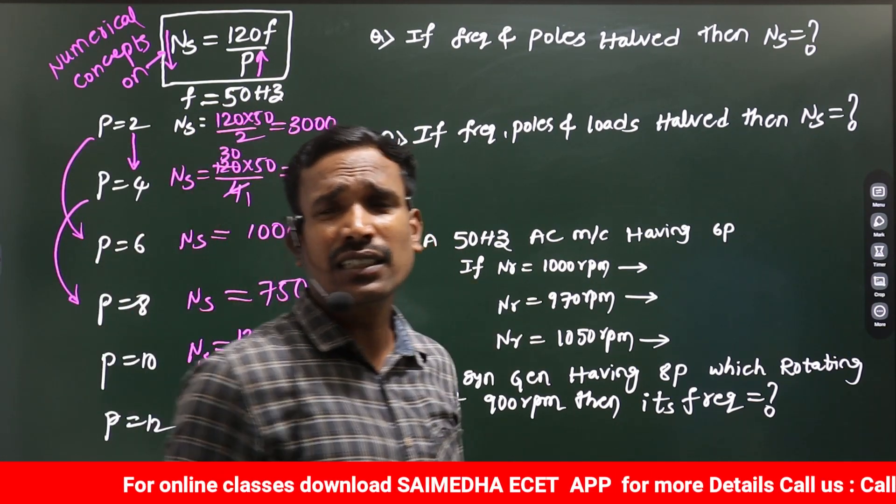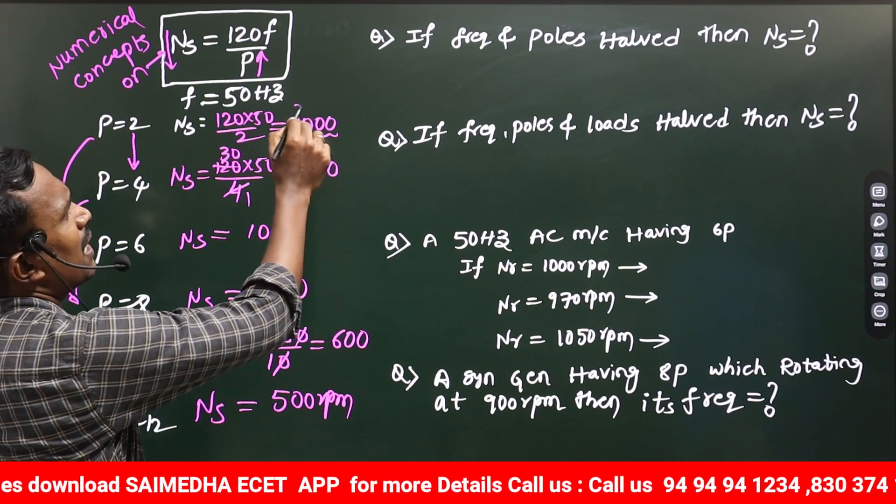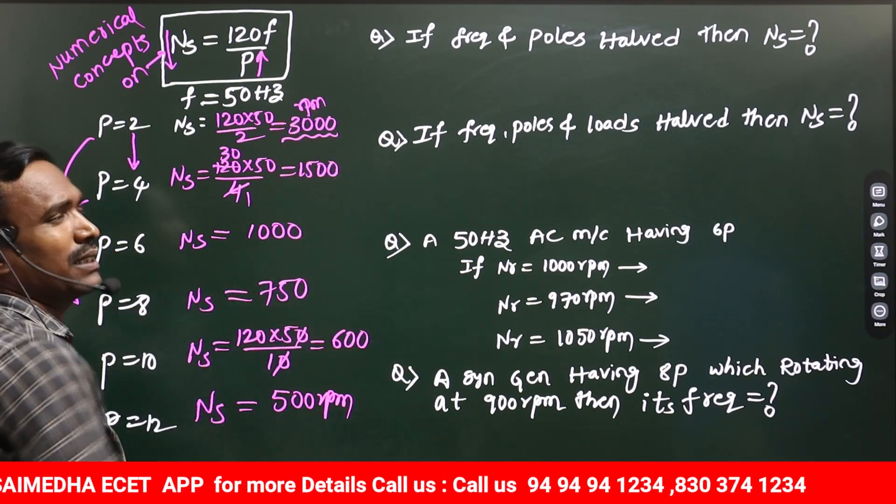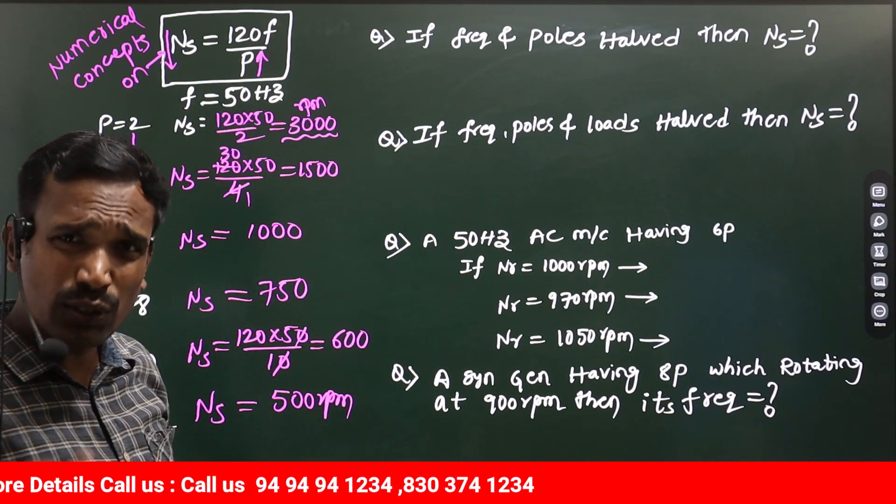So for 50 hertz, what will be the maximum speed? The maximum speed is 3000 RPM is the maximum. For 60 hertz also, you need to know.